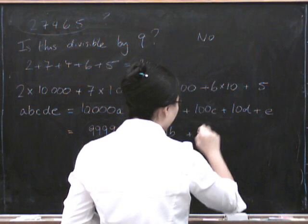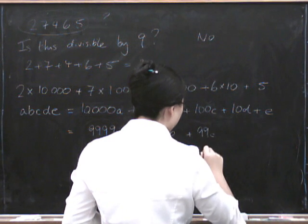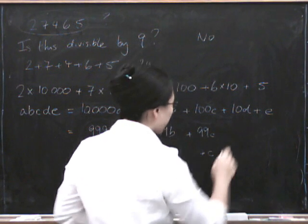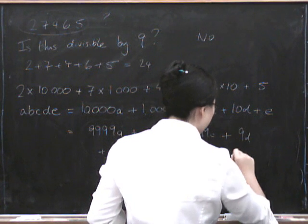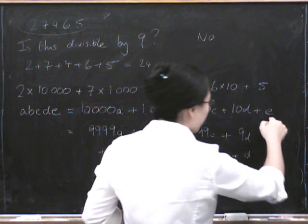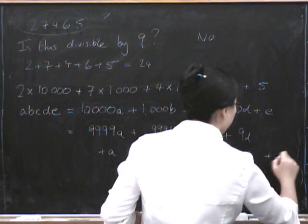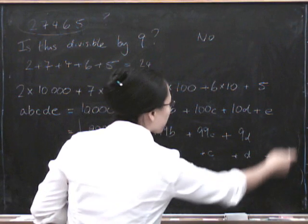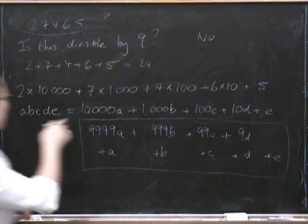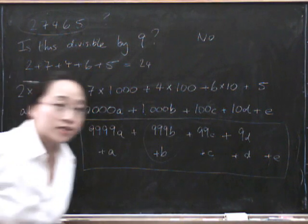So for our 100C, we have 99C, plus C. Here we have 9D, plus D. And then at the end here, we just get an E. So this whole thing as a sum is equal to the number that we first started with.